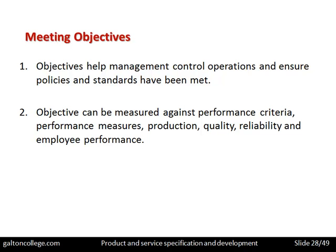Objectives can be measured against performance criteria: production, quality, reliability, and employee performance. If a particular department is well-resourced with modern machines and a trained workforce, expectations can be placed on it to meet the requirements of producing the product within a certain timescale. The objectives can, in a sense, be measured — management know roughly how long it's going to take.